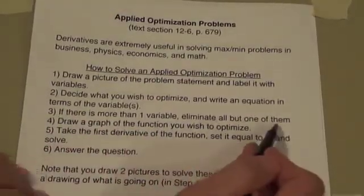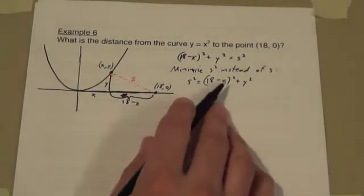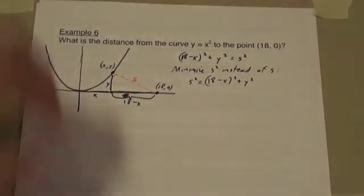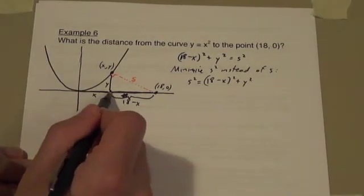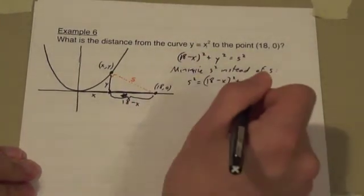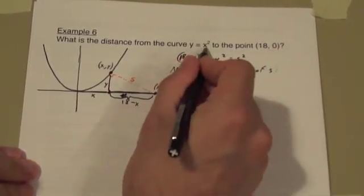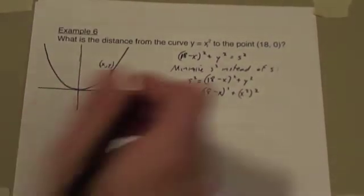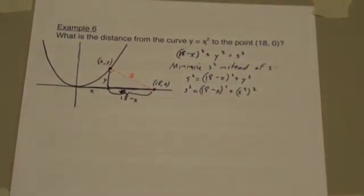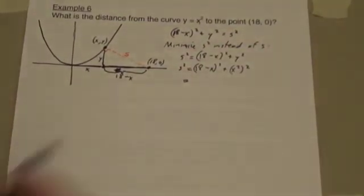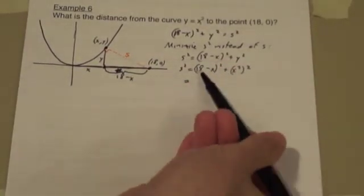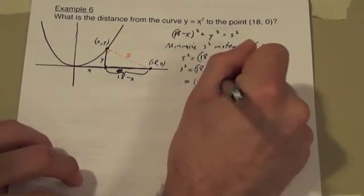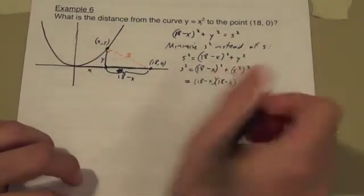Step 3. If there's more than one variable, eliminate all but one of them. Here again, there's more than one variable, an x and a y. But I think we can eliminate y pretty easily because this y is the height of the function at the x value x. We know that y equals x squared. So we really have this. Y is x squared, the height. It's x squared squared. Instead of y squared, it's x squared squared because y is x squared. So here we are eliminating the extra variable y.